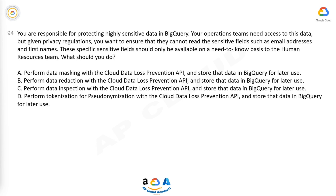A. Perform data masking with the Cloud Data Loss Prevention API and store that data in BigQuery for later use. B. Perform data redaction with the Cloud Data Loss Prevention API and store that data in BigQuery for later use. C. Perform data inspection with the Cloud Data Loss Prevention API and store that data in BigQuery for later use. D. Perform tokenization for pseudonymization with the Cloud Data Loss Prevention API and store that data in BigQuery for later use.